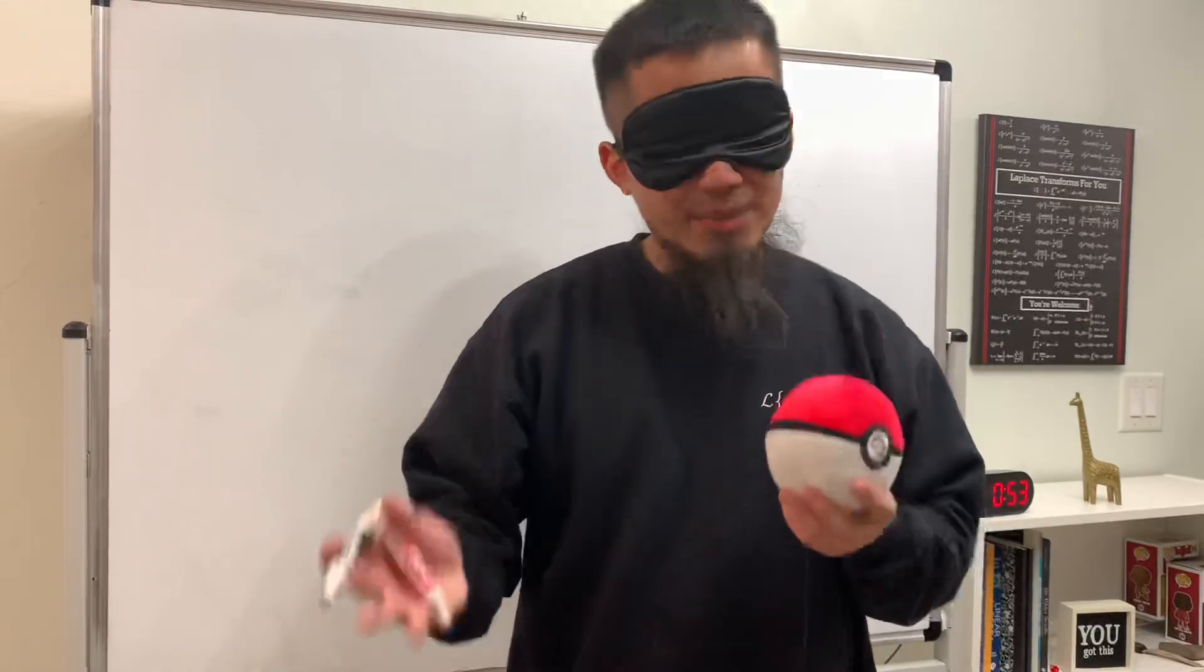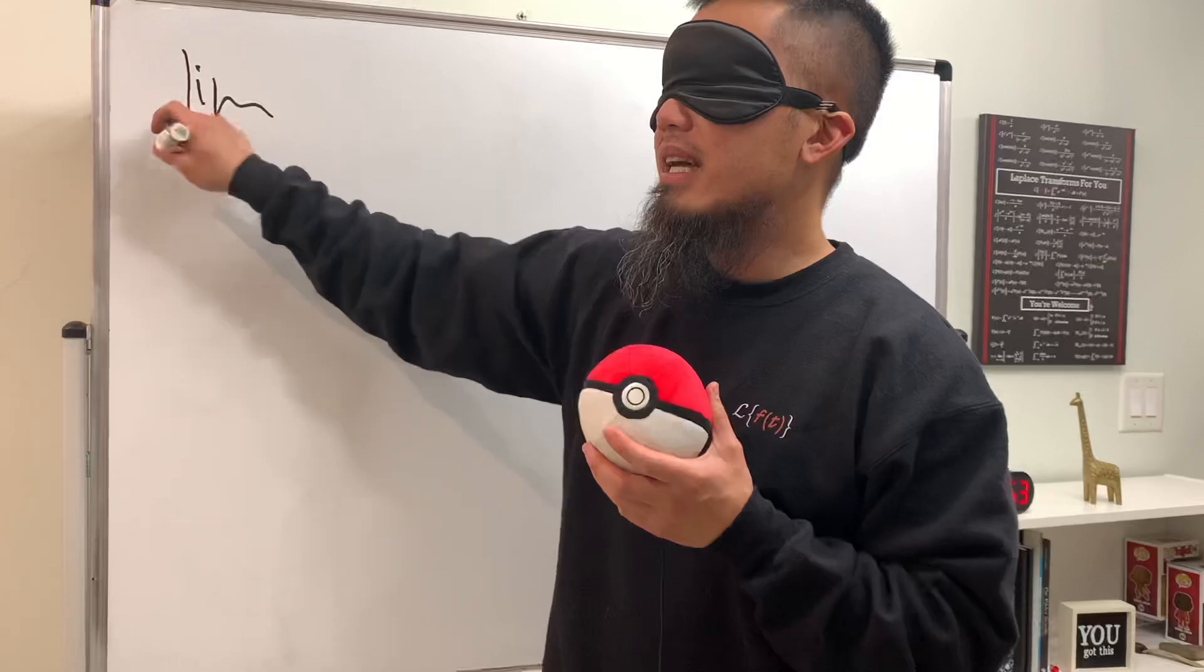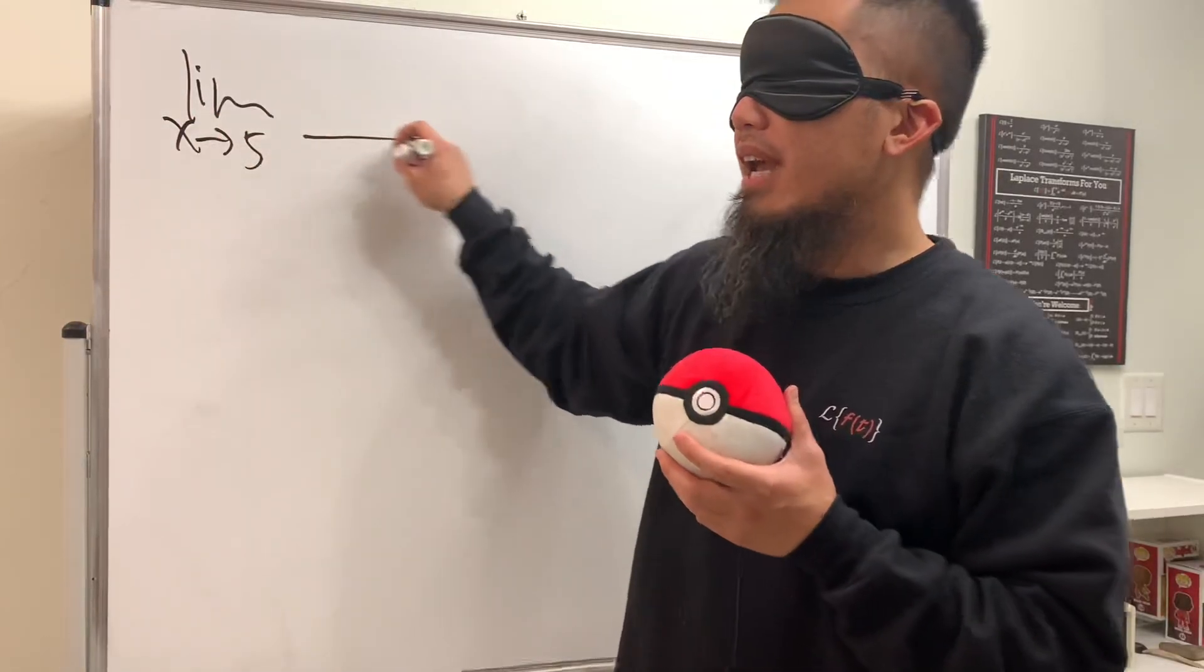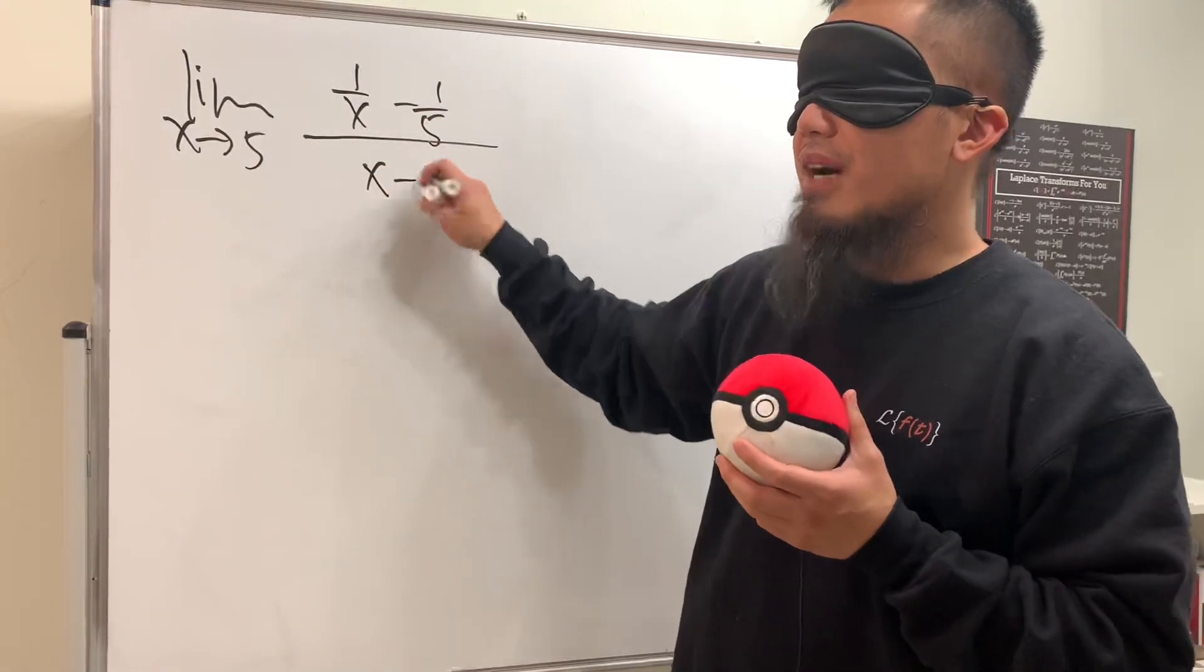We are going to do another limit. This time I will show you the limit as x approaching 5, and suppose we have (1/x - 1/5) over (x - 5).